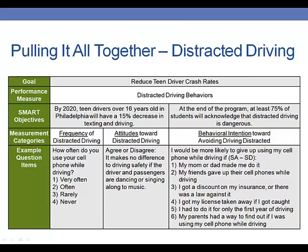What does this look like when we pull it all together? Recall from our earlier chapters that our programs have an overall goal — for example, to reduce teen driver crash rates. As a follow-up to that goal, we have a basic performance measure: measuring distracted driving behaviors. We hope that you will have developed some SMART objectives — objectives which are specific, measurable, achievable, realistic, and time-bound. As we've been discussing in this chapter, you may also have different measurement categories — perhaps the frequency of distracted driving, attitudes toward distracted driving, or behavioral intentions toward distracted driving. This table shows you some of the questions you might want to ask under each of these categories.